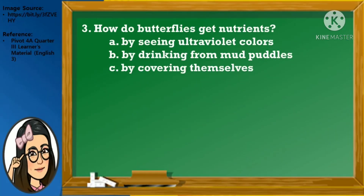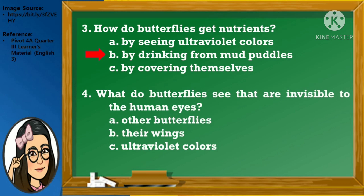Number 3: How do butterflies get nutrients? A. By seeing ultraviolet colors, B. By drinking from mud puddles, or C. By covering themselves. Very good! Butterflies get nutrients by drinking from mud puddles. Number 4: What do butterflies see that are invisible to the human eyes? A. Other butterflies, B. Their wings, or C. Ultraviolet colors. Butterflies see ultraviolet colors that are invisible to the human eyes.